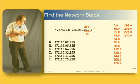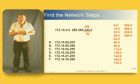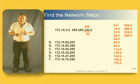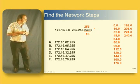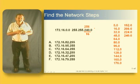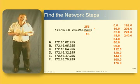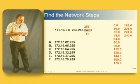On the second subnet, 16.0, the broadcast address is one IP address before 32.0. So that's 31.255. If we look at subnet 80, the broadcast address for subnet 80 is one IP address before 96.0. So it's 95.255.